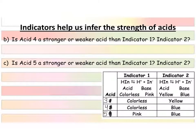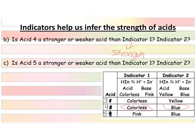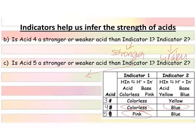Now let's look at acid four. Acid four is colorless, so it is stronger than indicator one. However, with indicator two it's giving us the base form, which tells us that the indicator is weaker than acid four. Then acid five gives us pink, so it's weaker than indicator one. And it gives us blue, which is the basic form, so it's also weaker than indicator two.